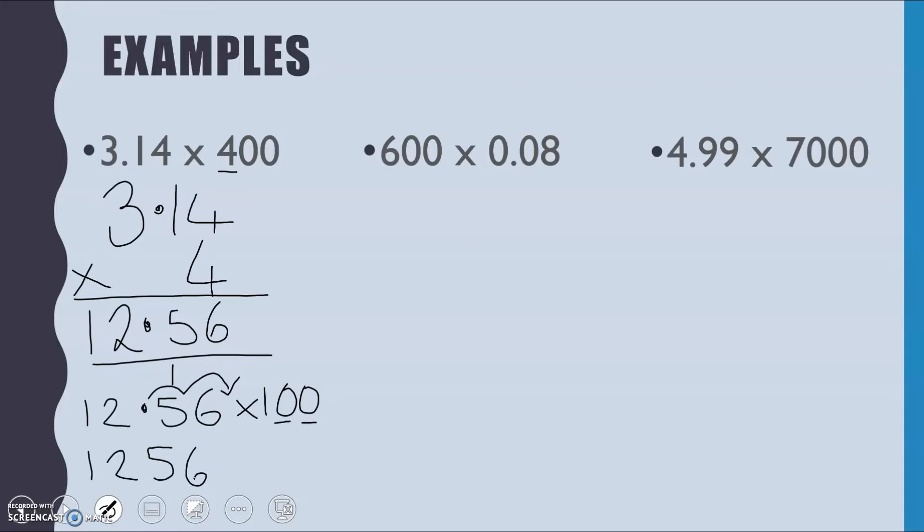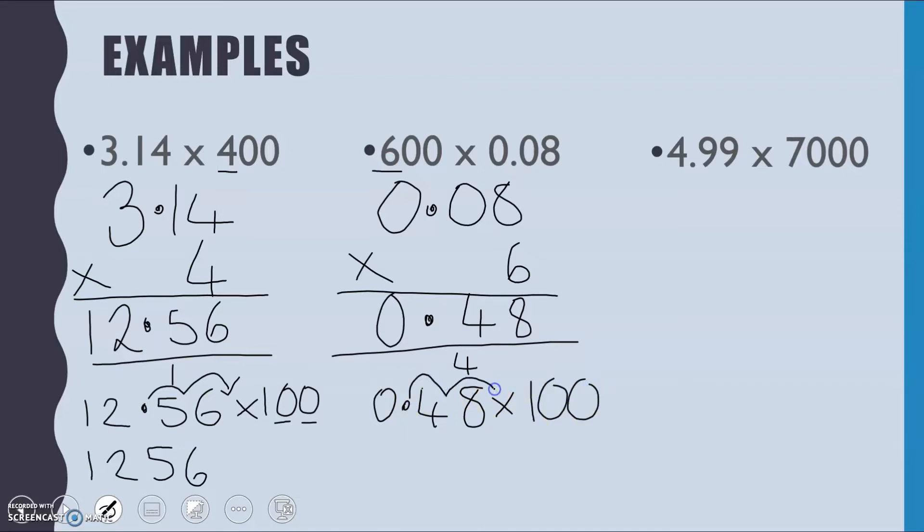Next then, we've got 600 times by 0.08. Remember, we can just swap them around. It means the same thing either way. So I'm just going to take my 0.08 and multiply it by that 6. Six eights are 48. So we put our 8 down, carry the 4. Six zeros are 0 plus that 4 is 4. Line up my decimal and then six zeros are just 0. So 0.48. We're then going to take that 0.48 and times by 100. So we're moving that decimal point back two, and that is just going to give us an answer of 48.